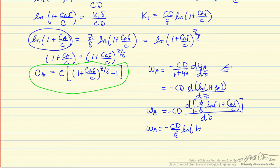So that means the flux of A minus CD over delta times the log 1 plus, I'm going to write this in terms of Ya again. So this is the flux of A to the surface, so this is the reaction rate because this is a steady state system, the net flux to surface is the amount that reacts.